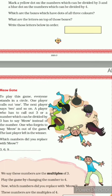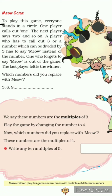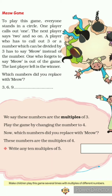Now come to the next page — the MO Game. To play this game, everyone stands in a circle. One player calls out 'one', the next says 'two', and so on. If you have 4 or 5 players, the numbers rotate. For example: first player says one, second says two, then three, then four, then the first player again says five, second says six, and so on.